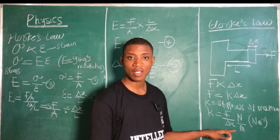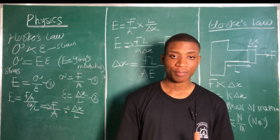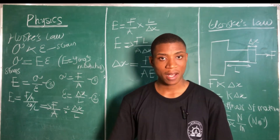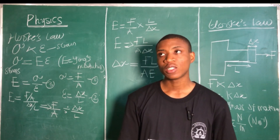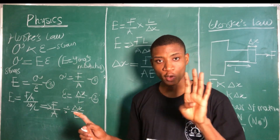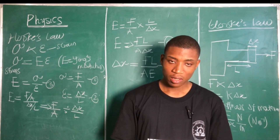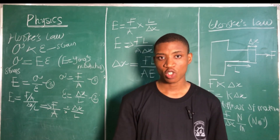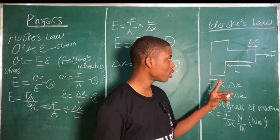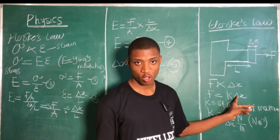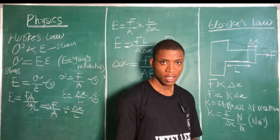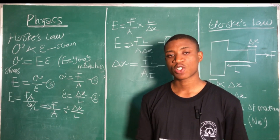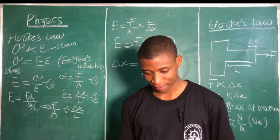That's all for today's class. We talked about physics — specifically force, energy, and matter. We covered the four types of matter: solid, liquid, gas, and plasma. We also discussed Hooke's law in relation to stress and strain, and Hooke's law in relation to force and extension. In our next class we'll be talking about the stress and strain relationship. See you there.